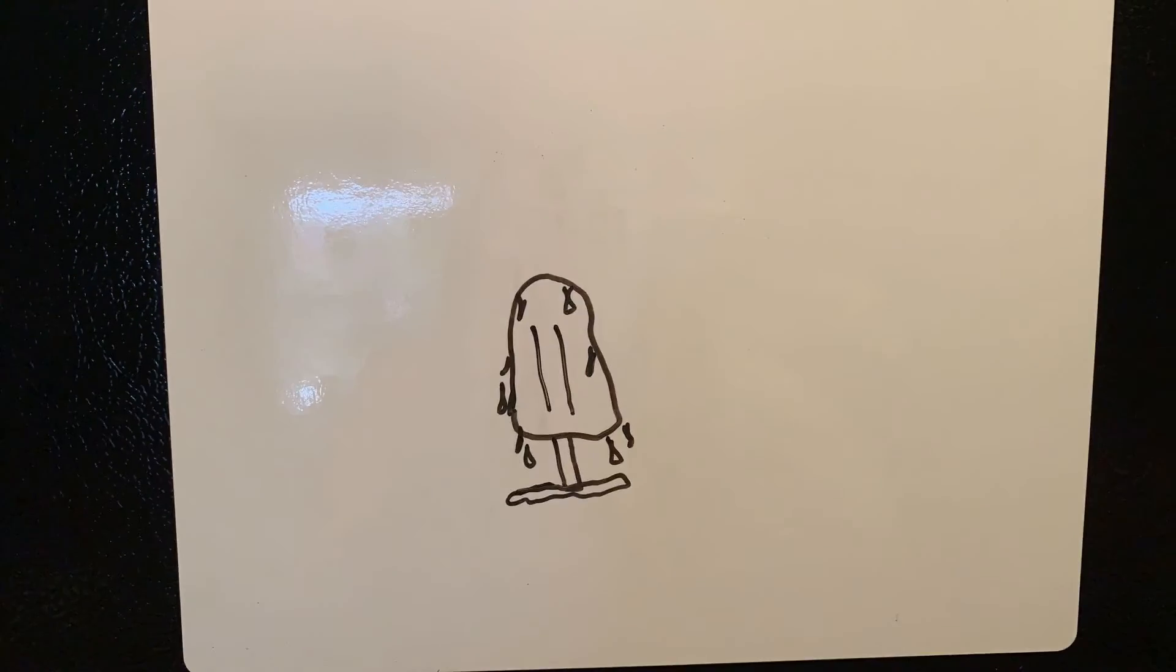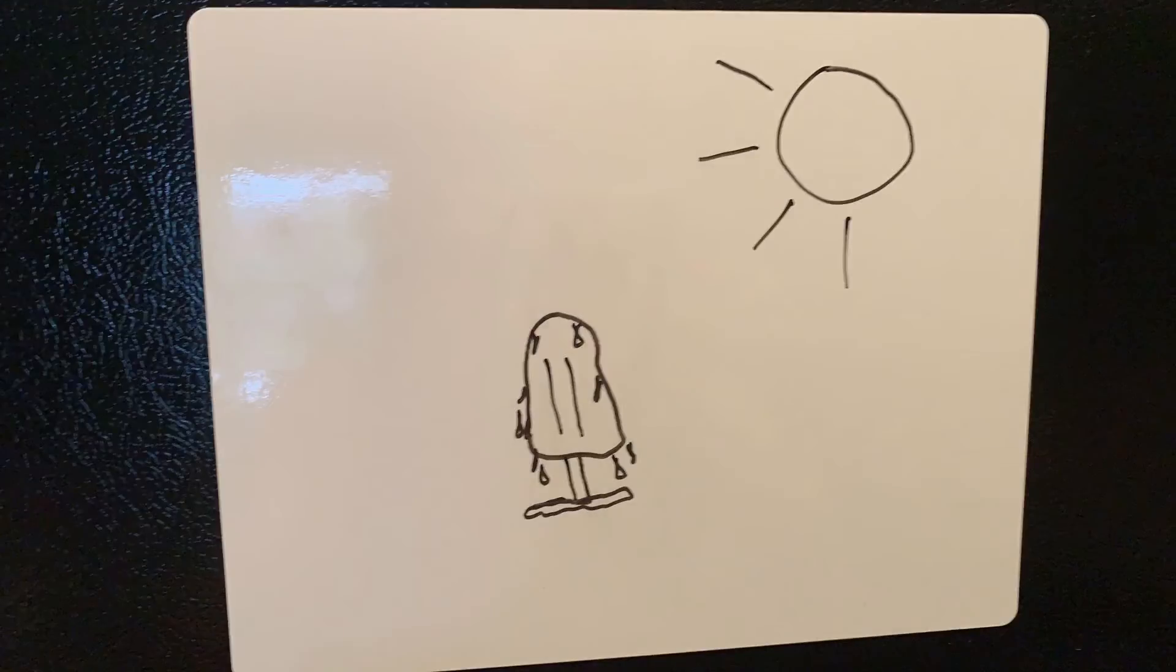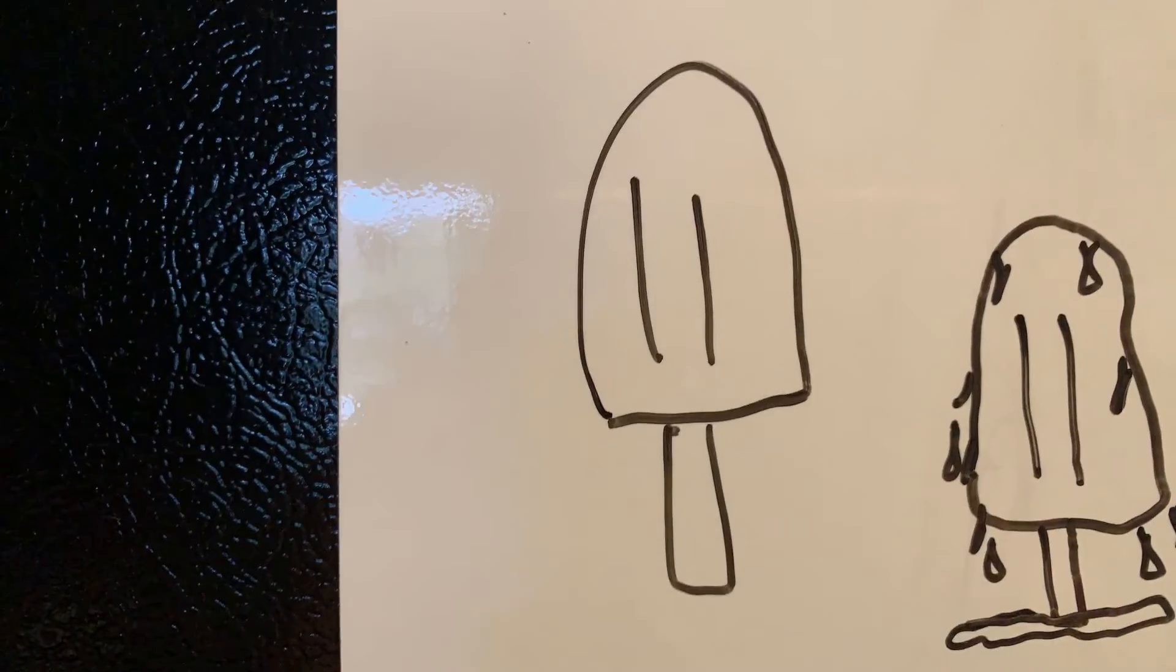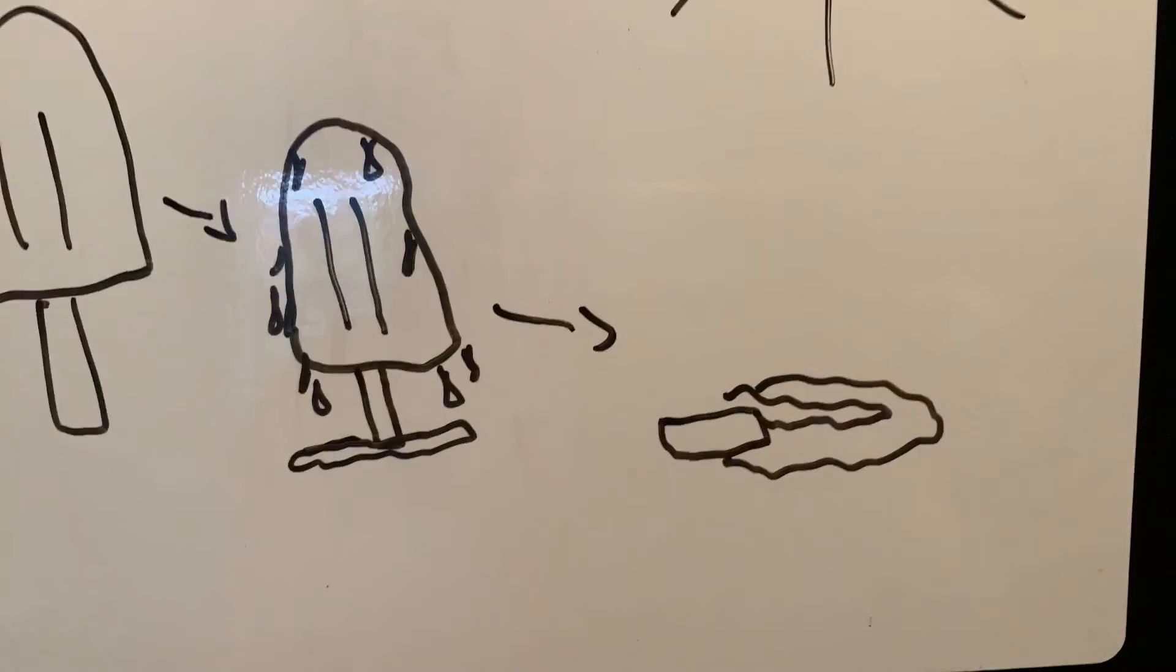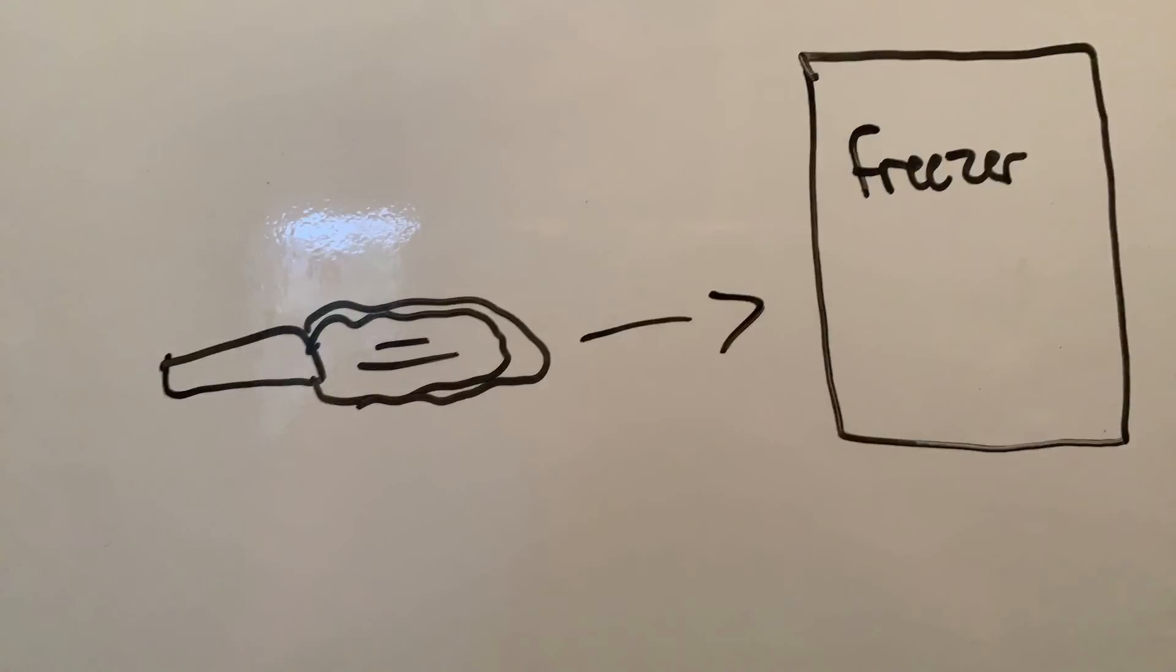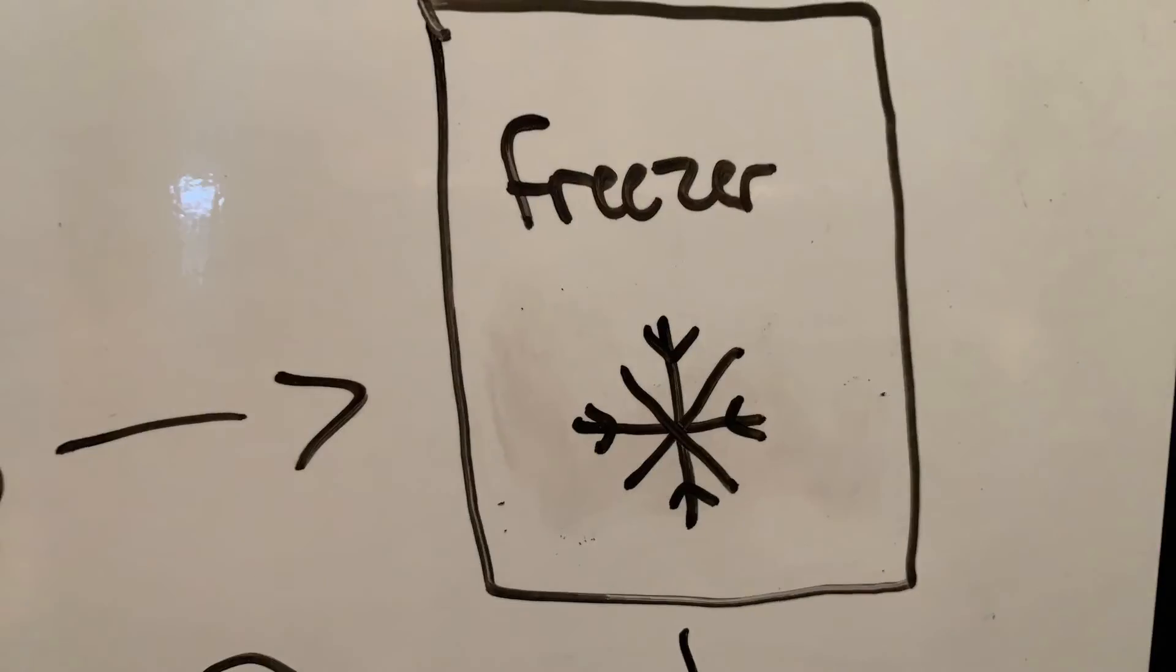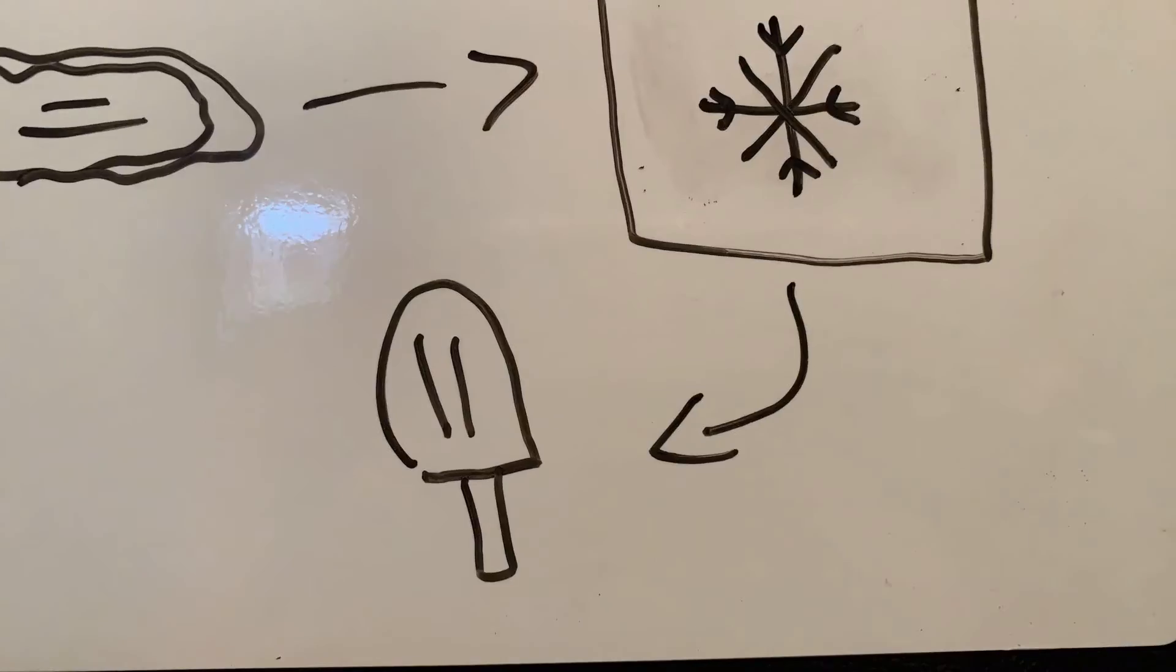So now you know that when your popsicle starts melting, the heat is causing it to change its state of matter from solid to liquid. But if you stuck your popsicle back into the freezer, the colder temperature would cause it to form back into a solid.